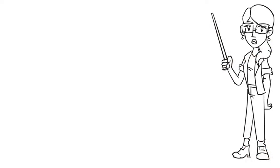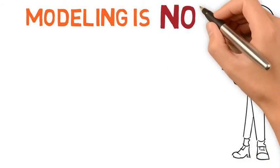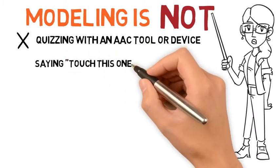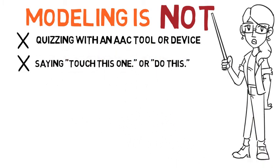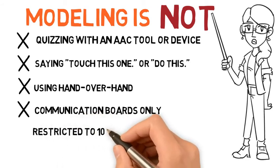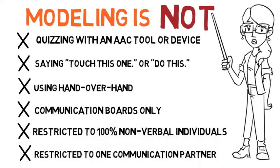Aided language is a necessary teaching strategy, but we must remember that modeling is NOT: quizzing with an AAC tool or device, saying 'touch this one' or 'do this,' or using hand-over-hand. It is not restricted to communication boards only, and it is not restricted to 100% non-verbal individuals. Aided language can be used with individuals with varying levels of verbal language, and modeling is not restricted to one communication partner — it should be used by all partners in all environments.